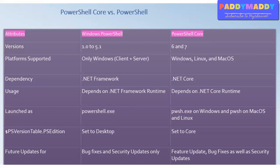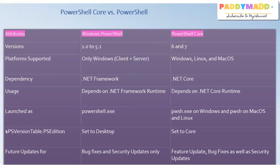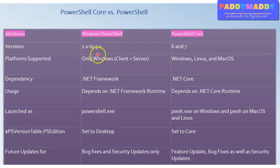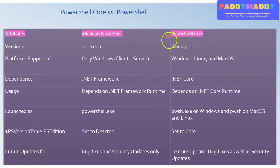PowerShell Core starts from versions 6 and 7 — those are the latest versions. If you look here, 5.1 is almost the end of any future release of Windows PowerShell. That means Windows PowerShell will end with 5.1 only, and all upcoming PowerShell releases will be PowerShell Core.